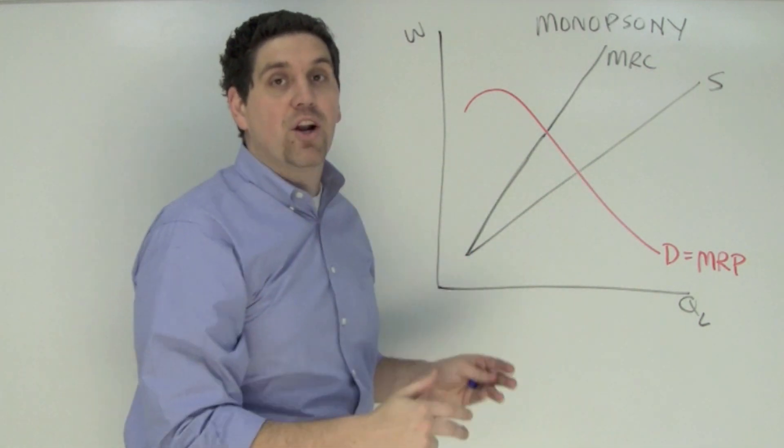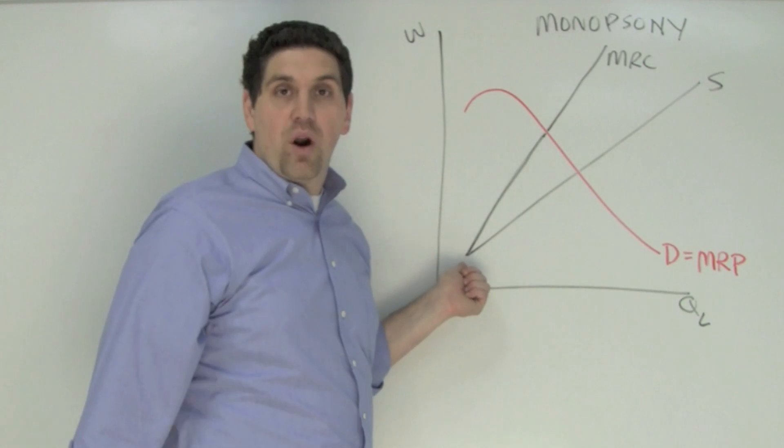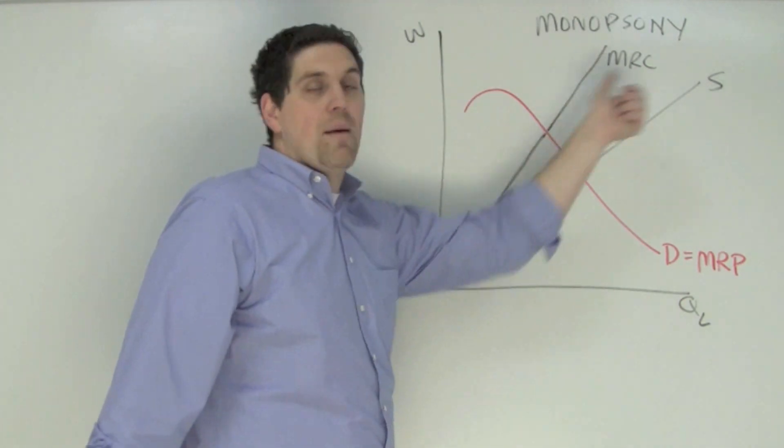This upward sloping supply curve for labor shows how much people are willing and able to work for. At $1 not that many people are going to go work for this company, but at $500 a whole lot more workers will.